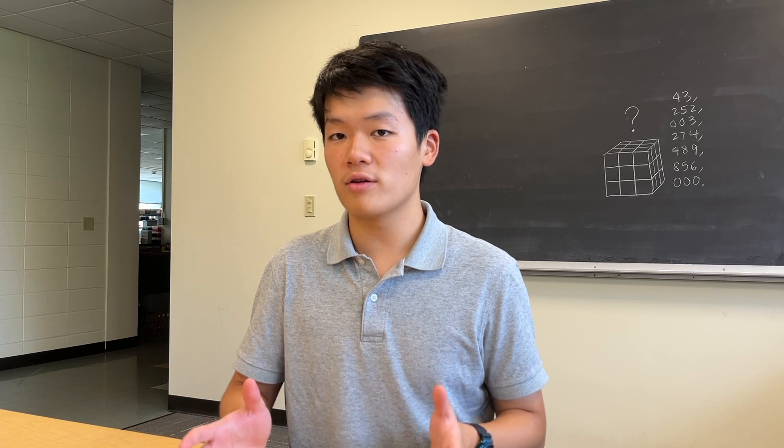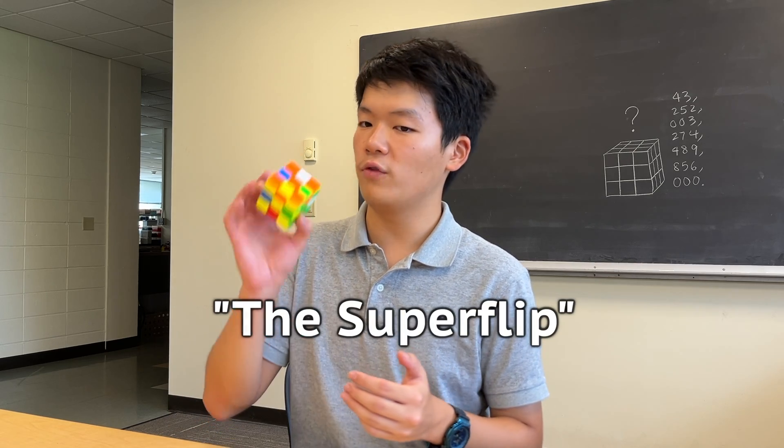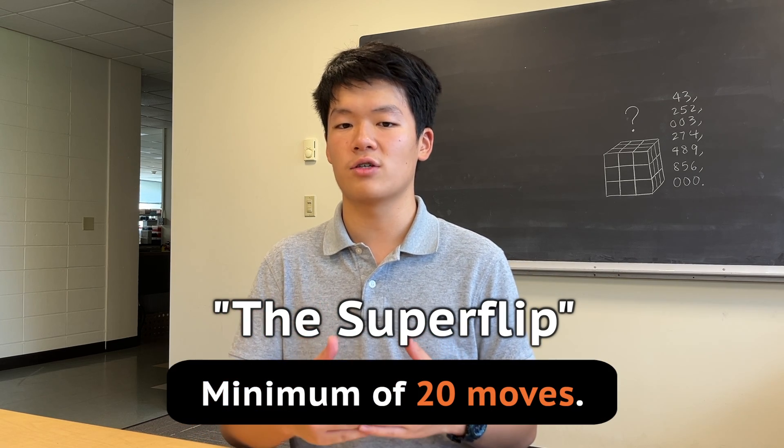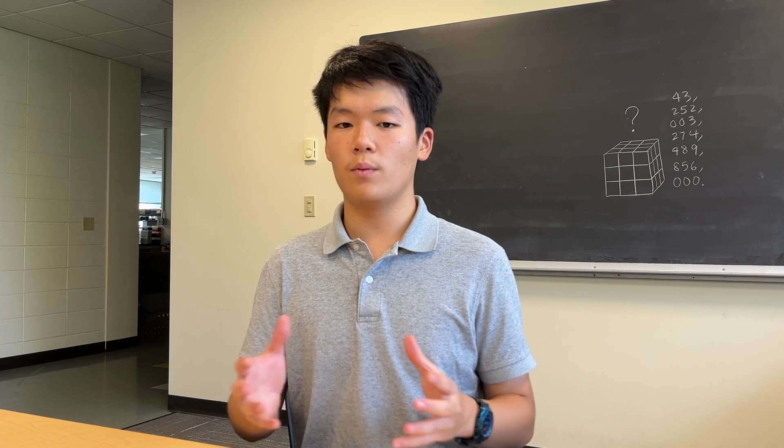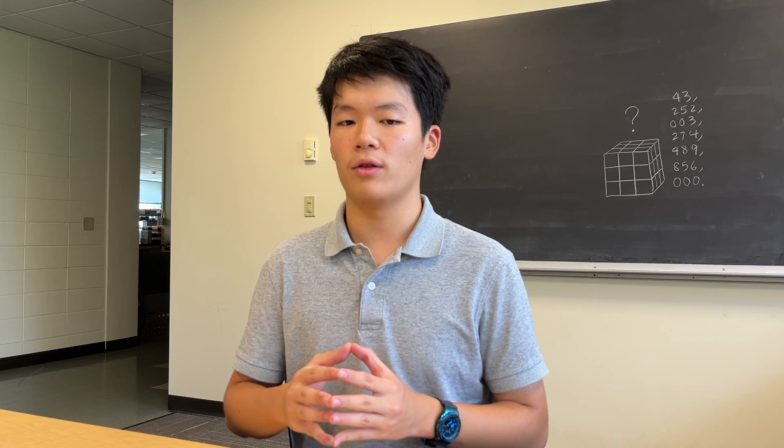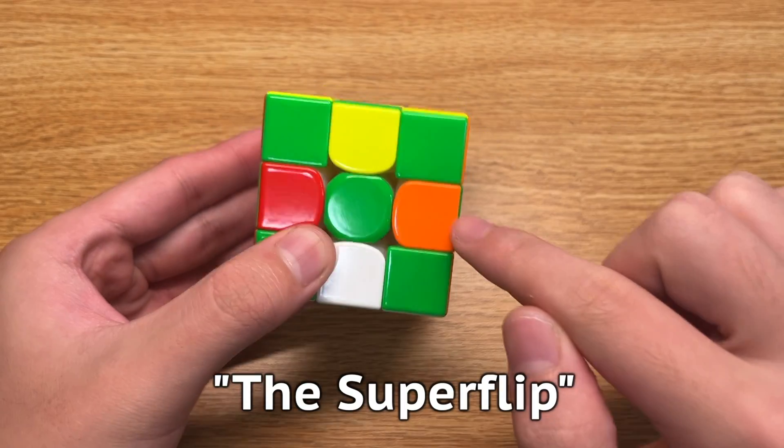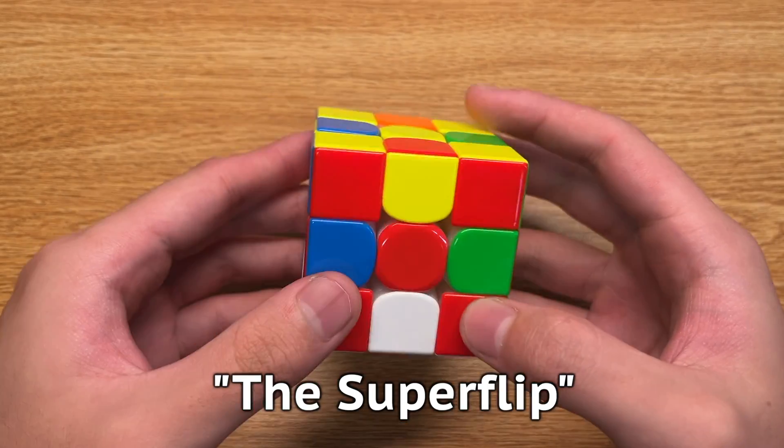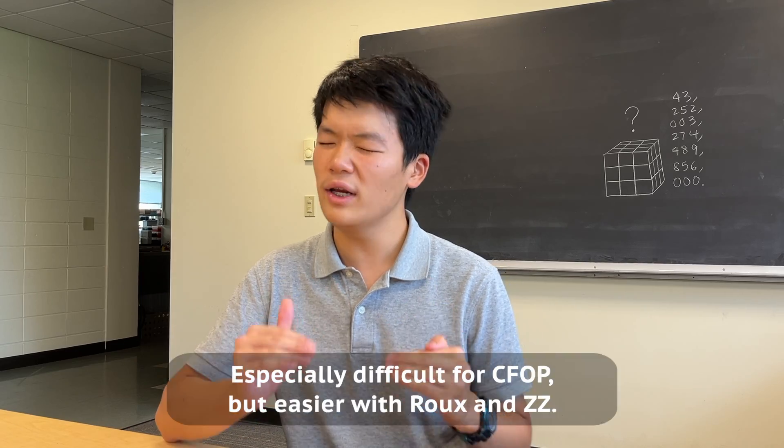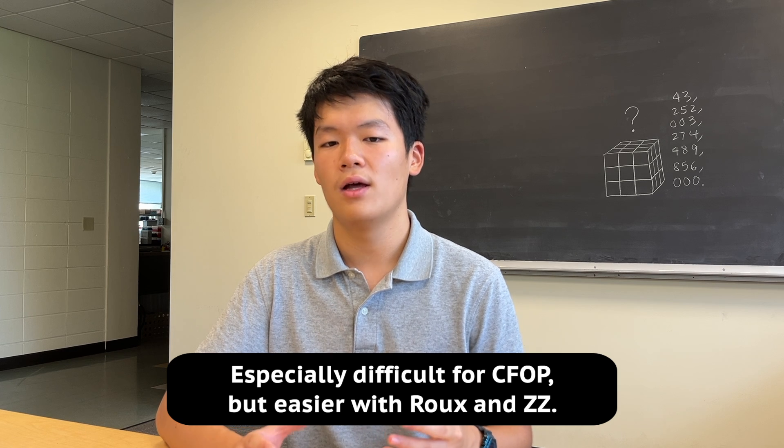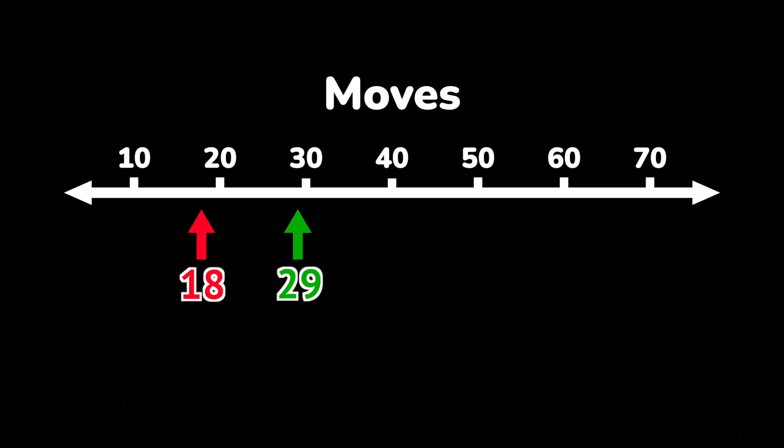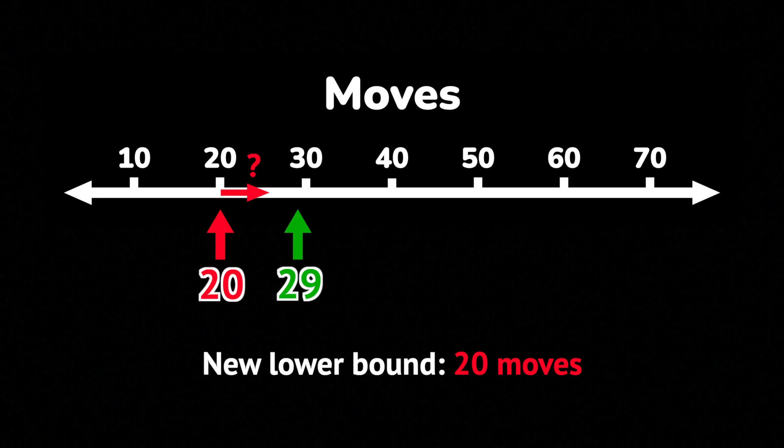Using large amounts of computing power, Reid proved that the famous superflip scramble required a minimum of 20 moves to solve just a few days after his discovery of the new upper bound. This method was inspired by Kociemba's algorithm. The superflip is a special scramble where all corners of the cube are solved in their respective positions, but all edges are flipped. This case is notoriously known to be very difficult using the CFOP method, though it is easier with other methods such as Roux. Nevertheless, Reid has proven that the new lower bound for God's number is 20 moves, but he conjectures that the actual lower bound is higher.